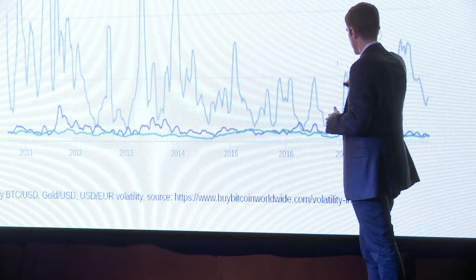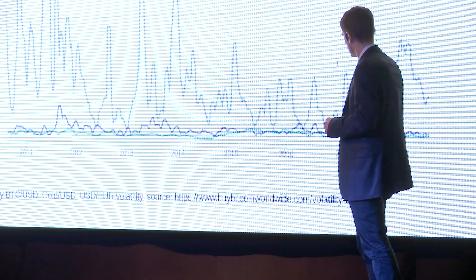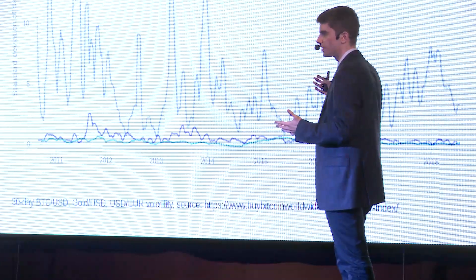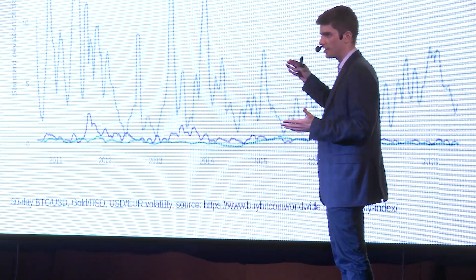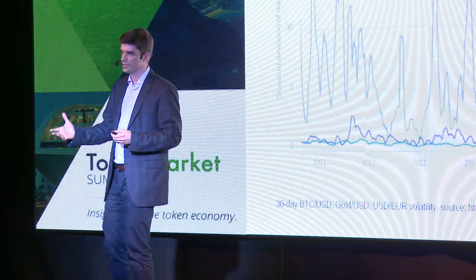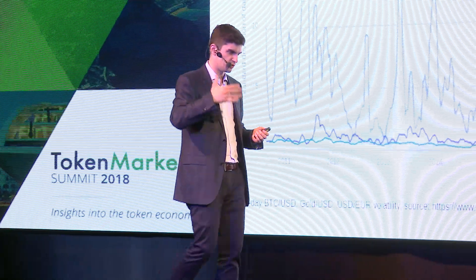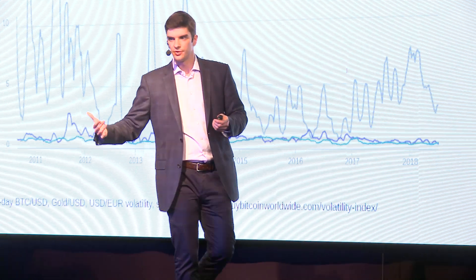Let us now compare the volatility of Bitcoin to other volatilities. The blue line is Bitcoin volatility, the purple line is volatility of gold to US dollar, and the green line is volatility of US dollar to euro. It is very obvious that the volatility of Bitcoin is orders of magnitude higher than the volatility of traditional assets. Some may say that Bitcoin's volatility is cool — it attracts a lot of speculative trading volume and you can profit from the price rising.